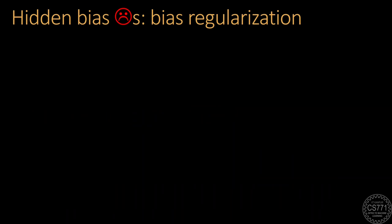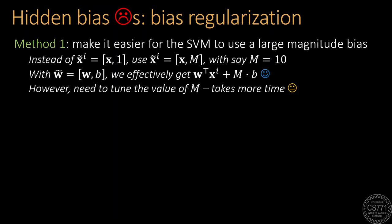Since the hidden bias formulation is otherwise so nice, let us try to see how to overcome the bias regularization problem. The simplest and most popular way is to append a larger constant at the end of the feature vector instead of appending a 1.